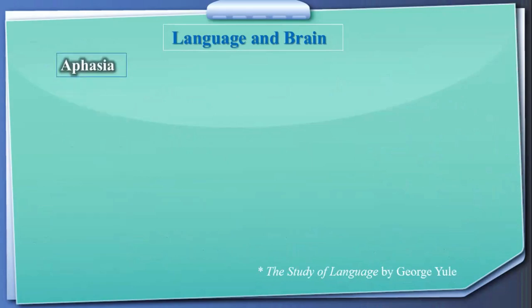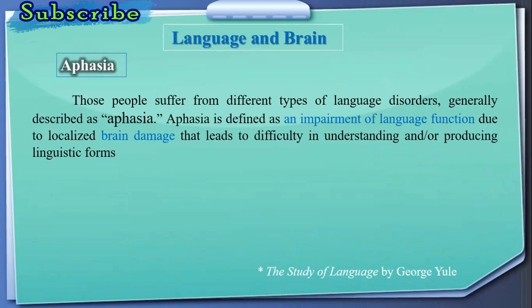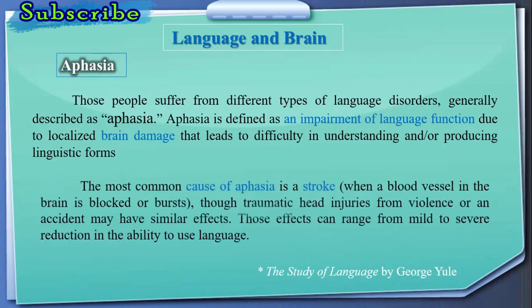Aphasia is defined as an impairment of language function due to localized brain damage that leads to difficulty in understanding and/or producing linguistic forms. The most common cause of aphasia is a stroke, when a blood vessel in the brain is blocked or bursts, though traumatic head injuries from violence or an accident may have similar effects. These effects can range from mild to severe reduction in the ability to use language.